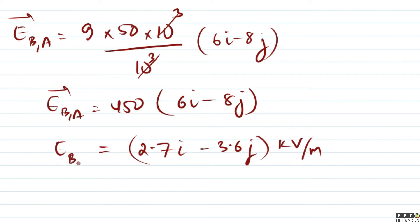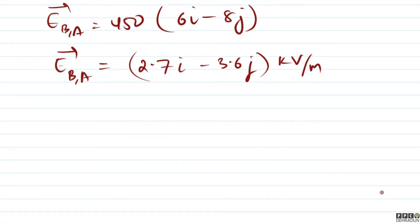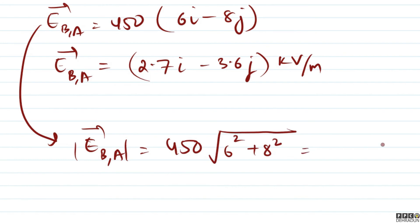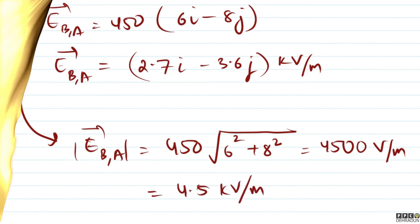This is our electric field at B because of A. Now if we want to find its magnitude, that is also very easy. The magnitude of electric field at B because of A equals 450 multiplied by under root of 6 squared plus 8 squared, which equals 450 multiplied by 10, giving 4500 volts per meter, which we can write as 4.5 kilo volts per meter.